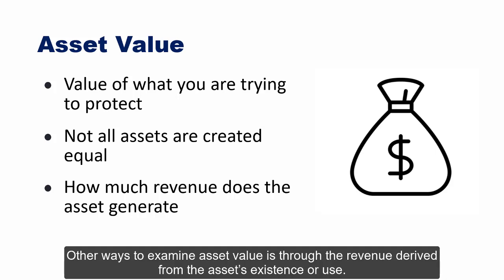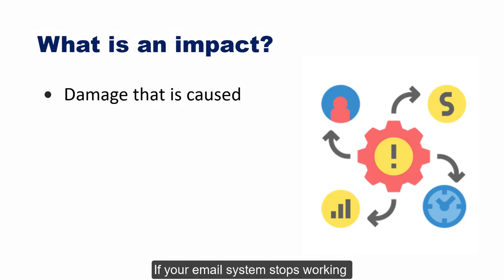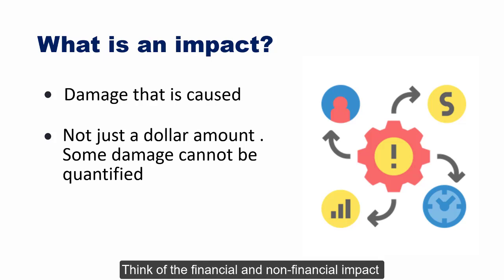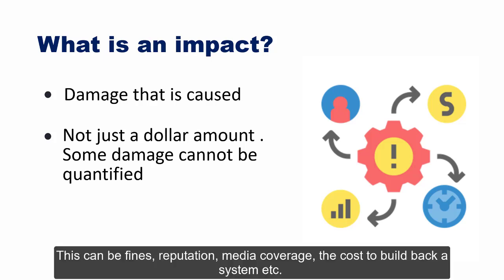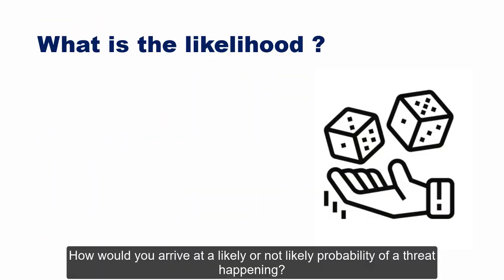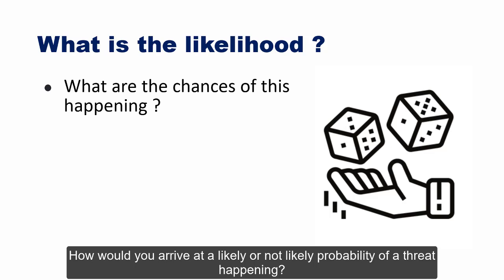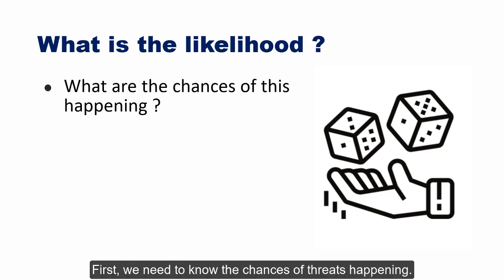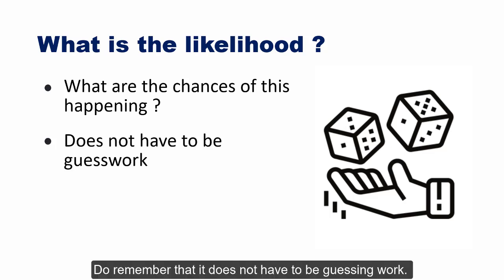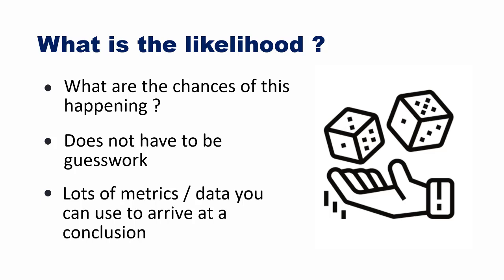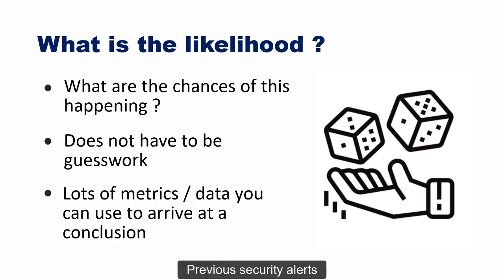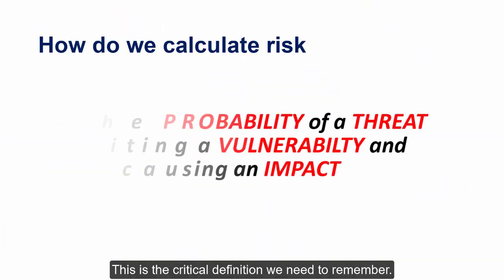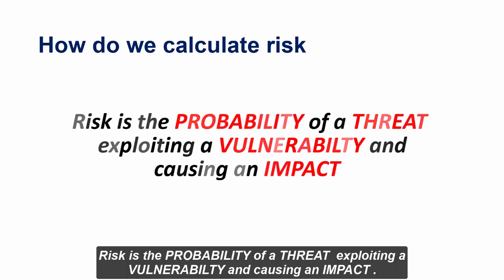Other ways to examine asset value include the revenue derived from the asset's use. What happens if your business is down for a day? If your email system stops working? If your credit card database is breached? Consider financial and non-financial impacts — fines, reputation damage, media coverage, cost to rebuild a system. To arrive at a likely probability of a threat happening, use incident reports, audit reports, industry reports, threat intel, and previous security alerts. Risk is the probability of a threat exploiting a vulnerability and causing an impact.